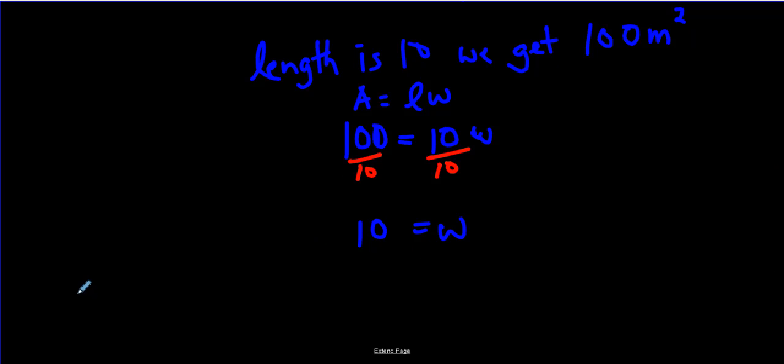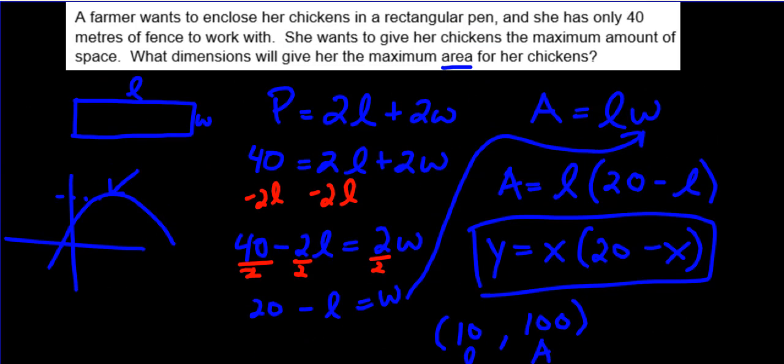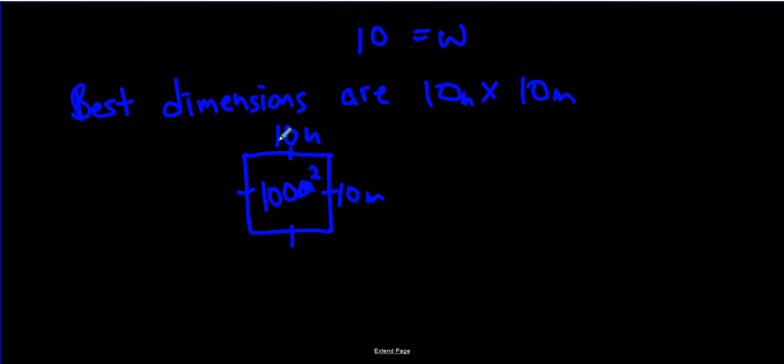Area is equal to length times width. When the area is 100, the length is 10. But we don't know what W should be. Well, you can pretty much guess 10 times what will give you 100, and you'll probably say 10. But just to do it the algebraic style, get W all by itself, so divide both sides by 10. Your final answer should be W, or the width will equal 10. So the dimensions, the best dimensions that will give the maximum area are 10 by 10.